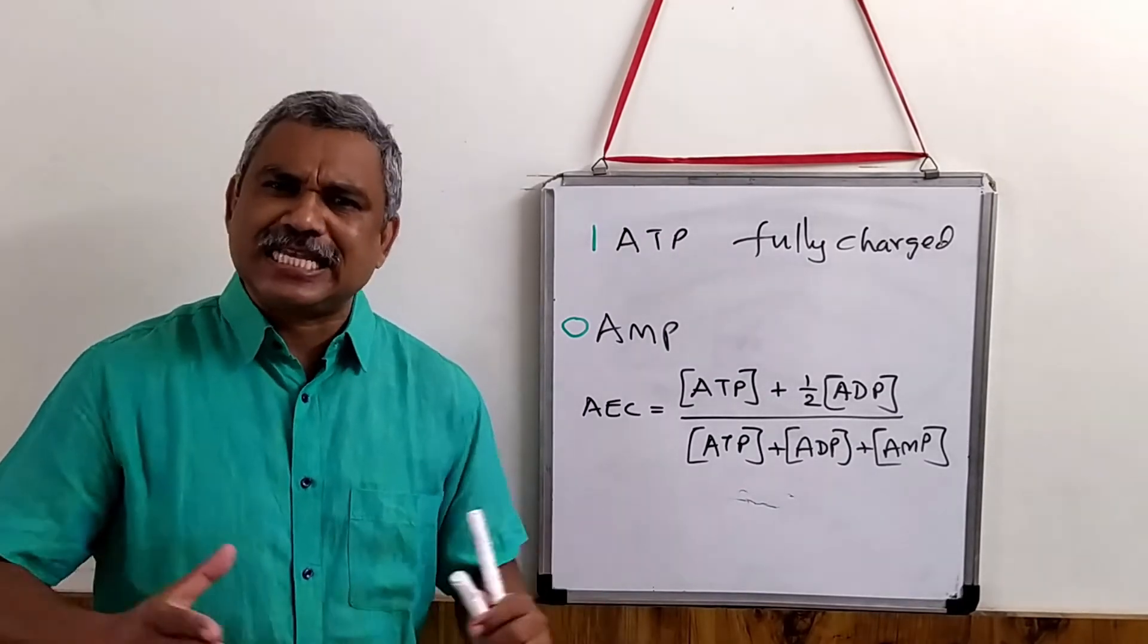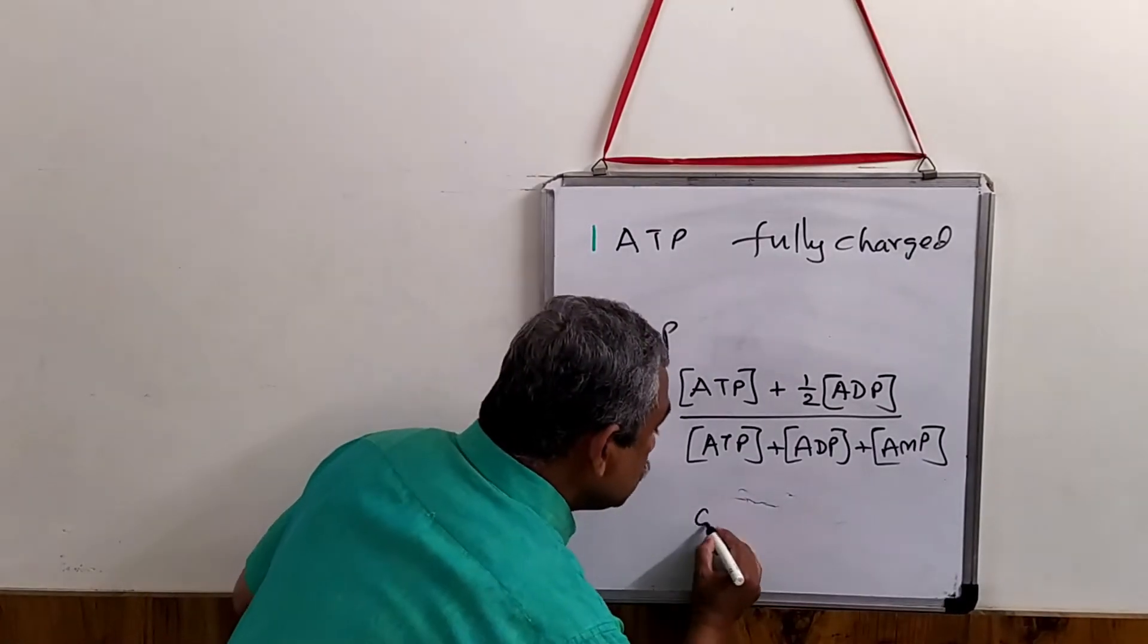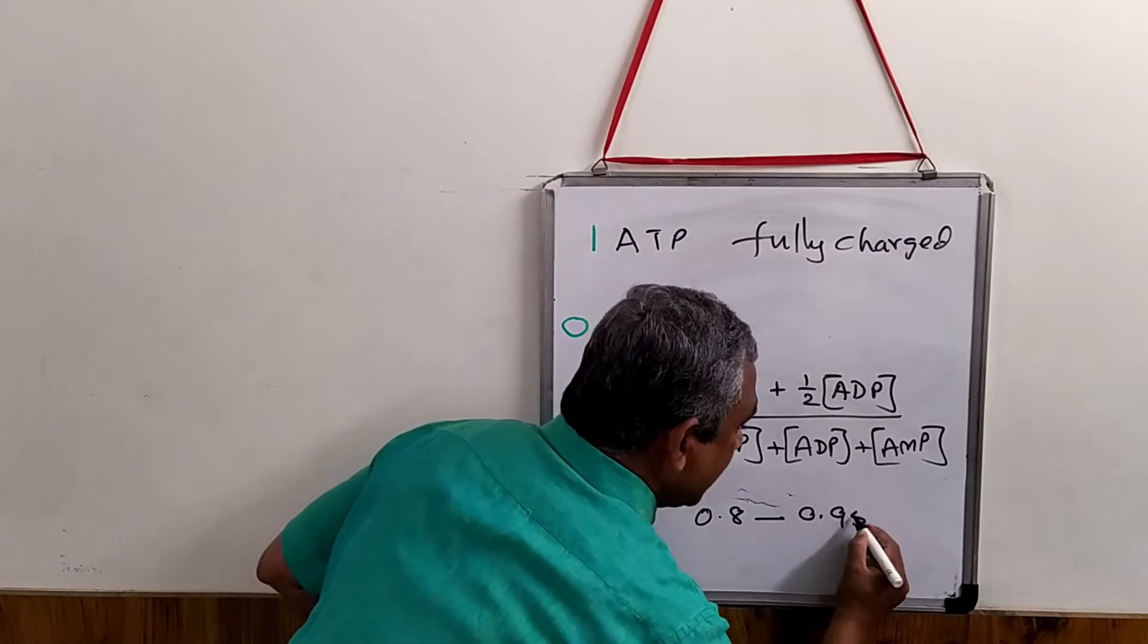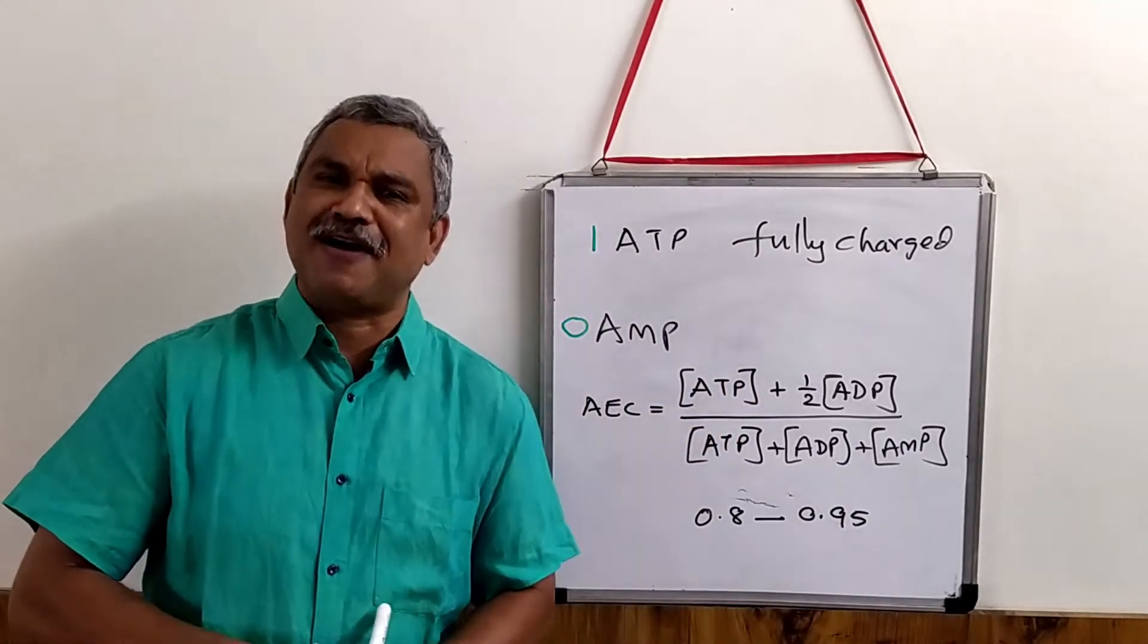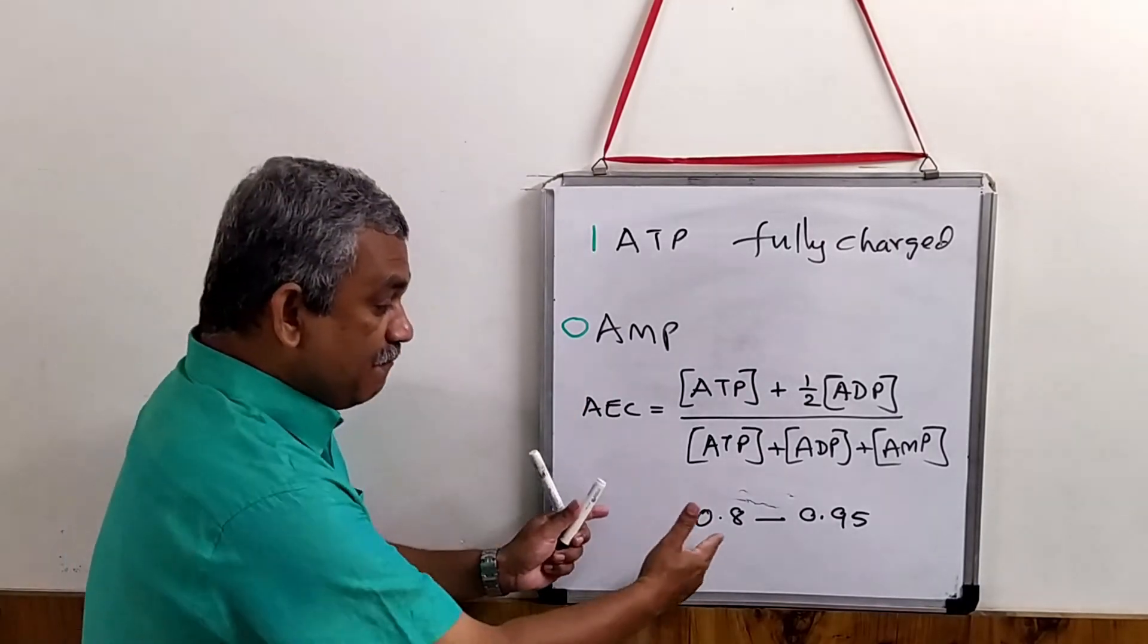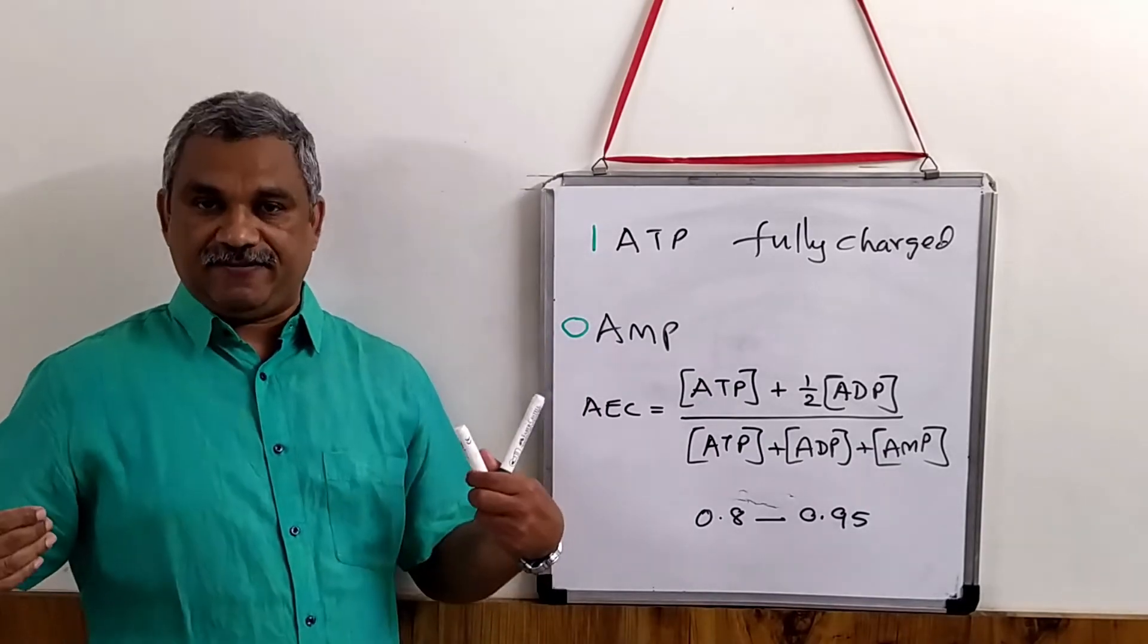Generally, in a cell, this value varies from 0.8 to 0.95. Generally, the value varies. Now, we should also understand, when this value is lower than 0.8, it is on the degradative level. Let us represent this by using a very simple graph.